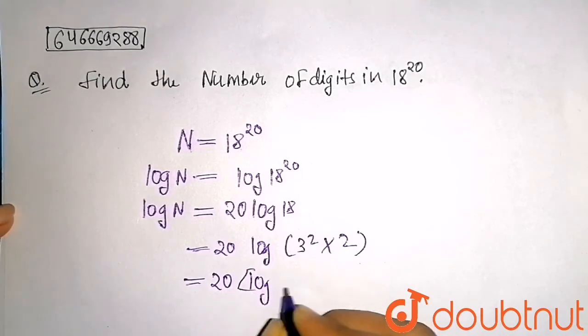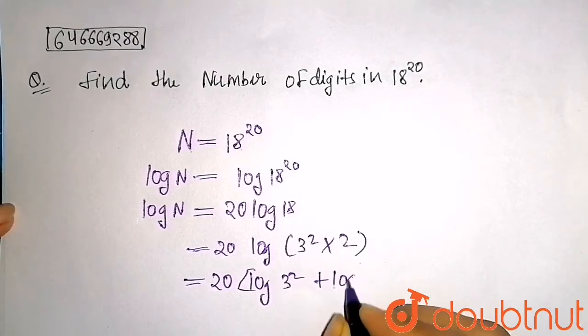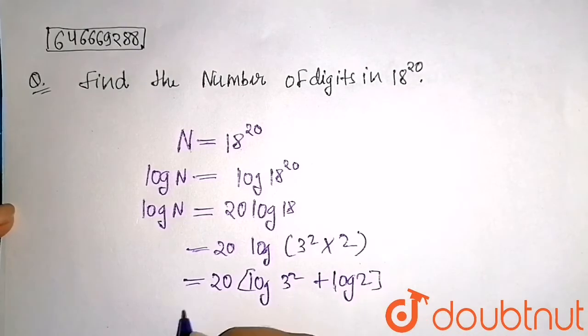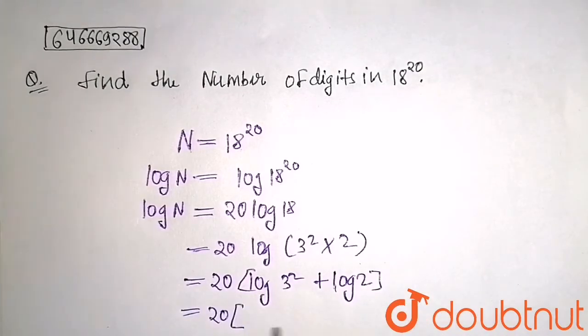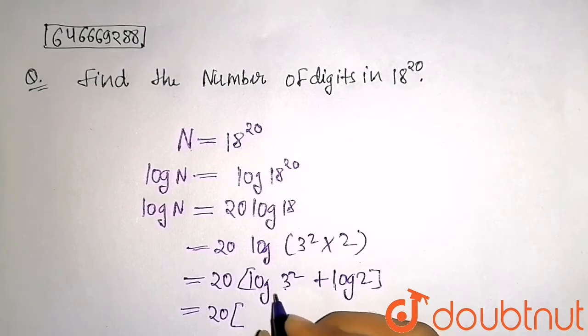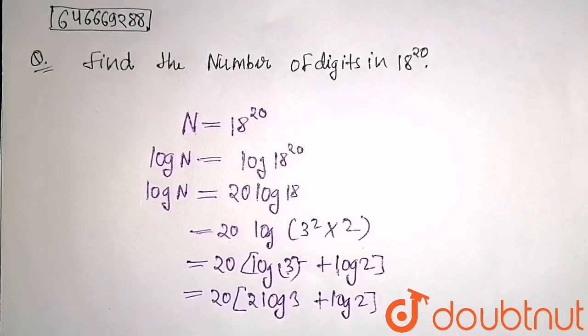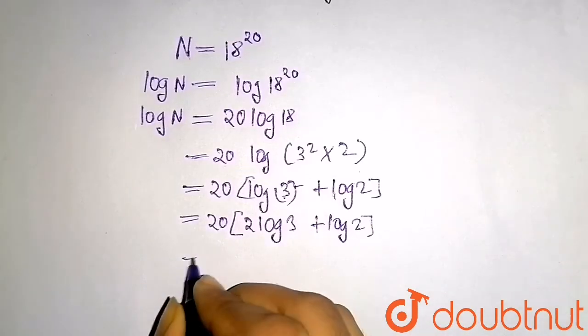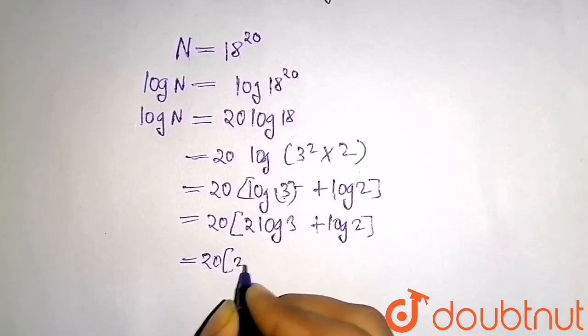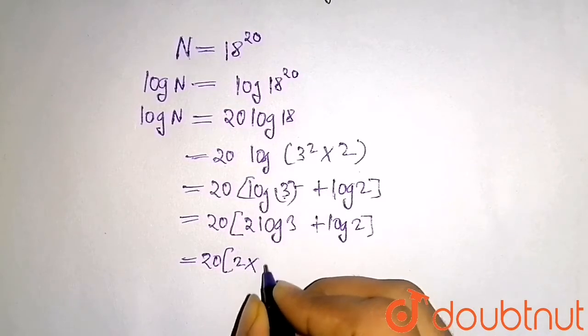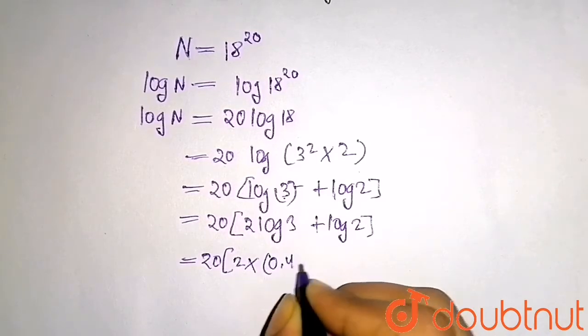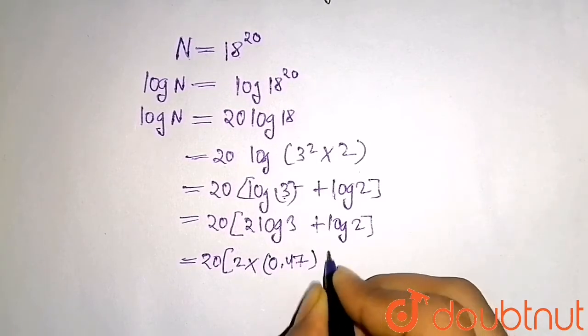Now log 3 squared - this 2 will come at front by the property of log, so 2 log 3 + log 2. Now here, 20 × 2 × the value of log 3 is 0.47, plus the value of log 2 is 0.301.